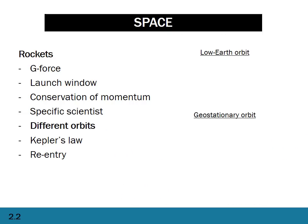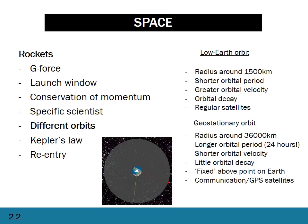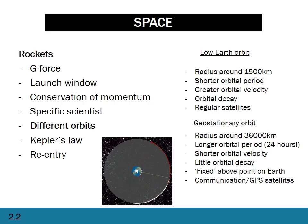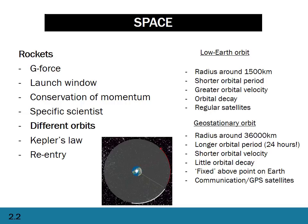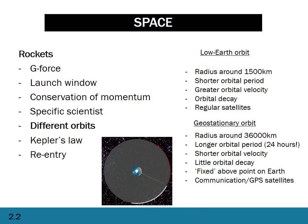There are two kinds of orbits we're interested in: low earth orbits and geostationary. Low earth orbits have a lower radial orbit, a radius of about 1,500 kilometers, a shorter orbital period, and a greater orbital velocity. They experience orbital decay, which means gas molecules hitting the satellite cause heat and friction, slowing it down over time until the satellite eventually comes back down to earth. Regular satellites usually are in low earth orbit — it's cheaper to put them there because it's obviously much closer to earth.